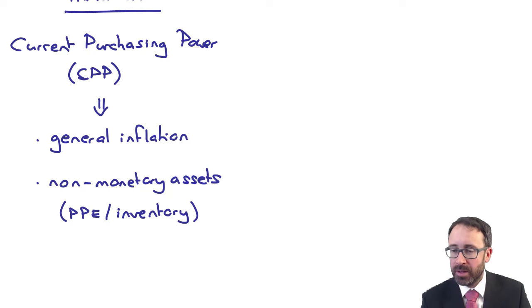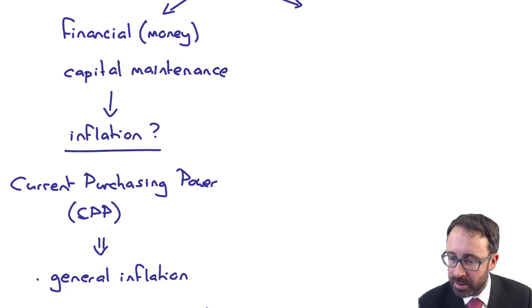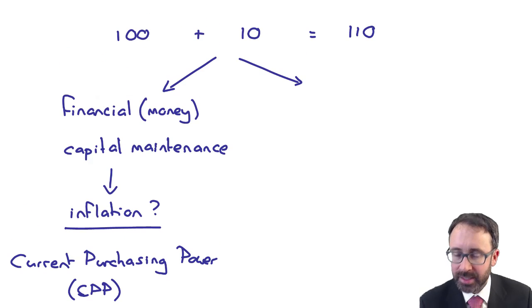And therefore if it is immaterial, it is not relevant to the users of the accounts. And let's face it, it's going to get complicated, so why complicate it any further? Doesn't make sense, does it? So what we do is we effectively ignore the inflation. If you were to incorporate it, you would use current purchasing power - general inflation applied to the non-monetary assets. Okay?